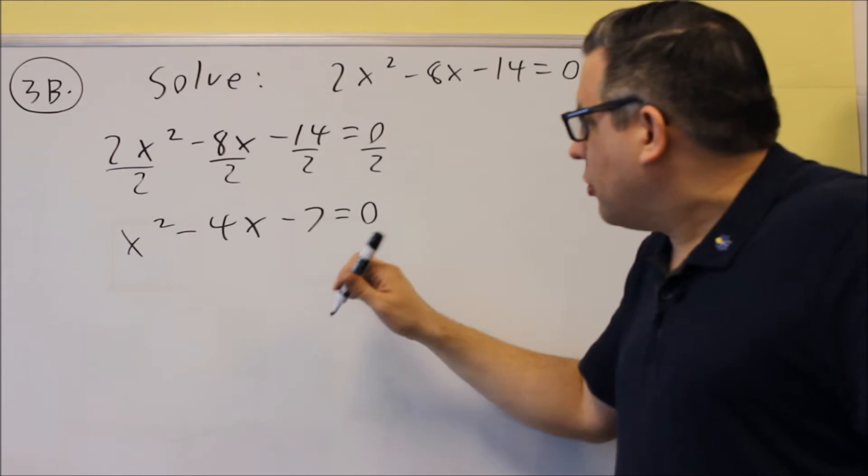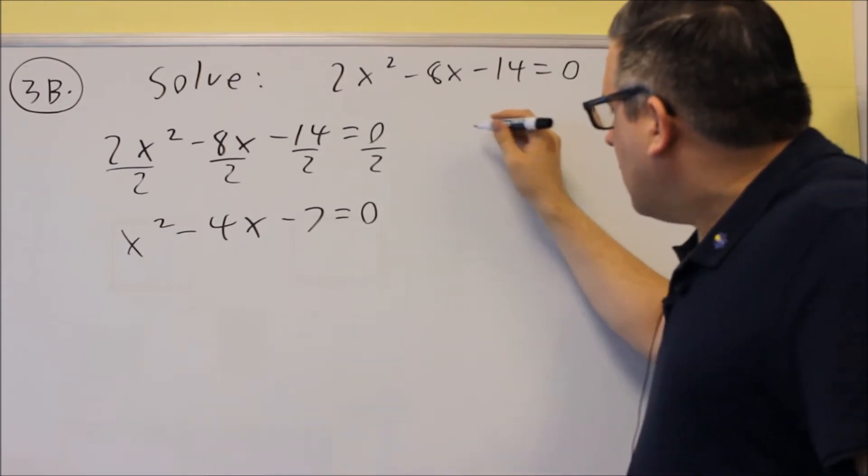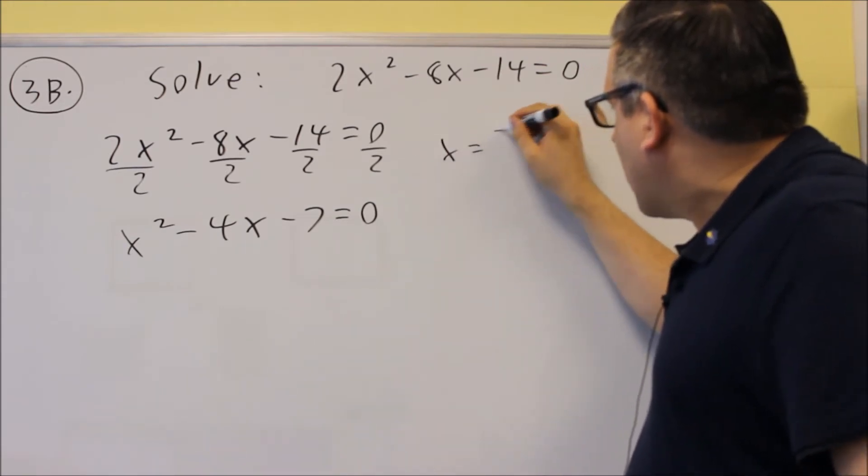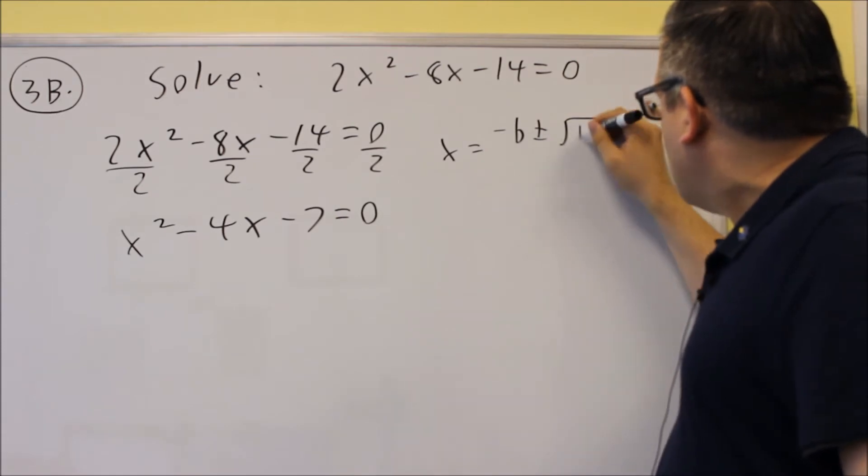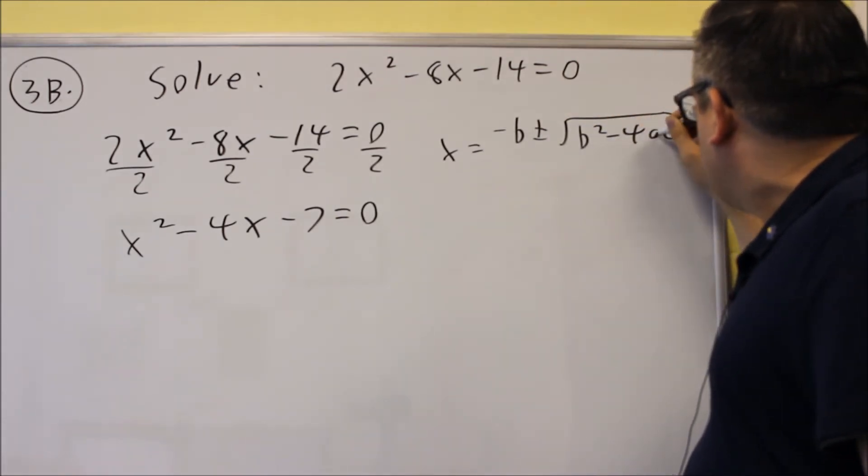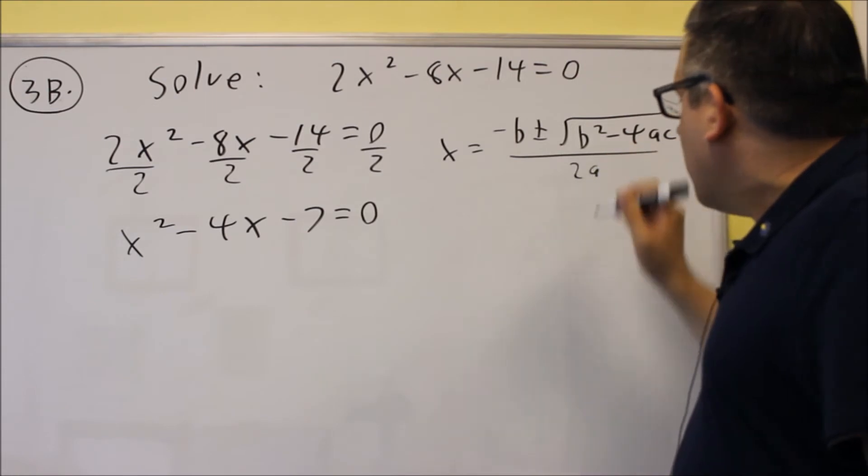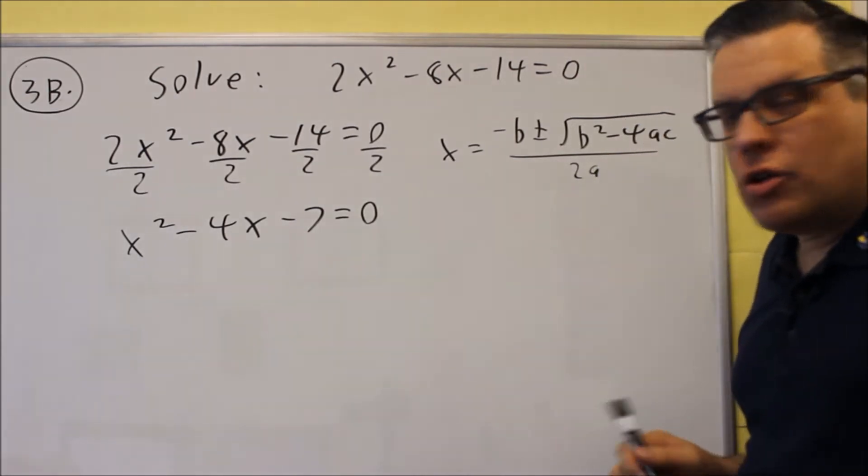Okay, so quadratic formula is x equals negative b plus or minus square root b squared minus 4ac over 2a. That's the quadratic formula you want to use.